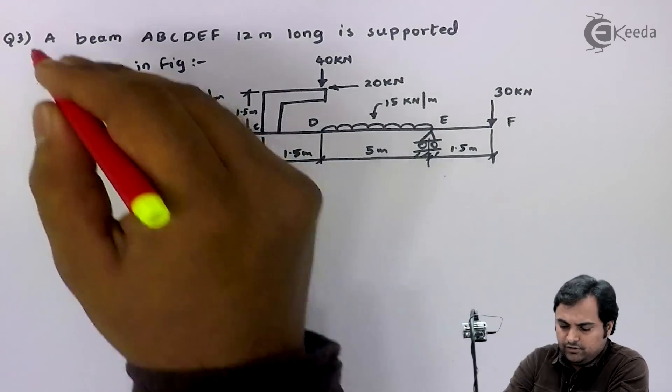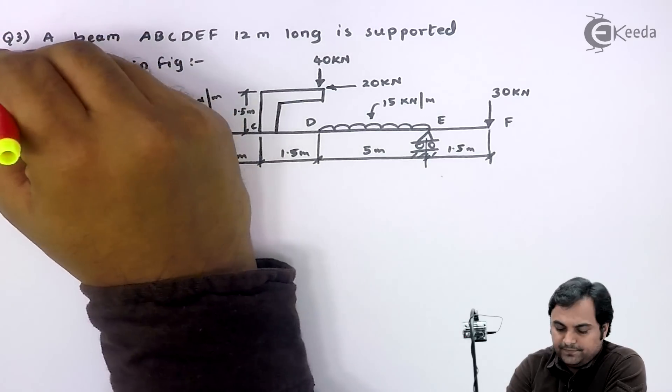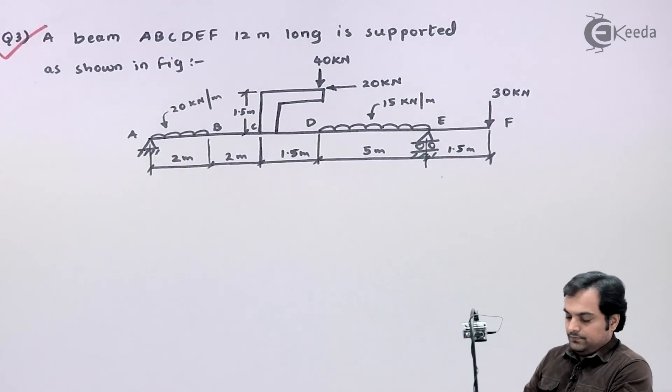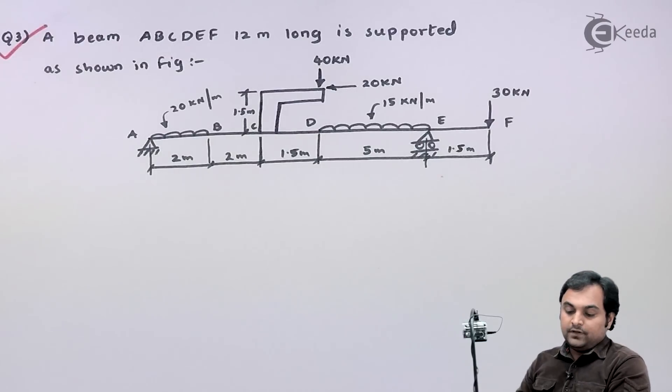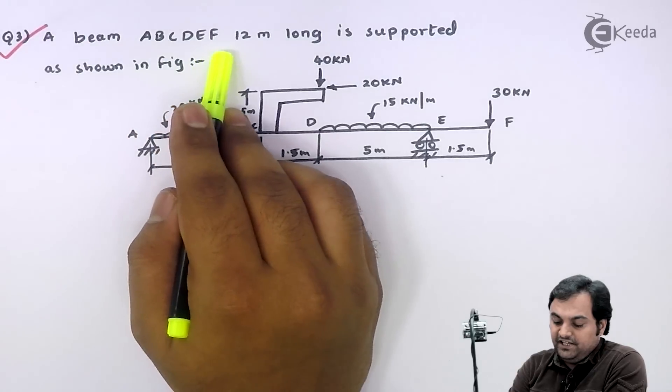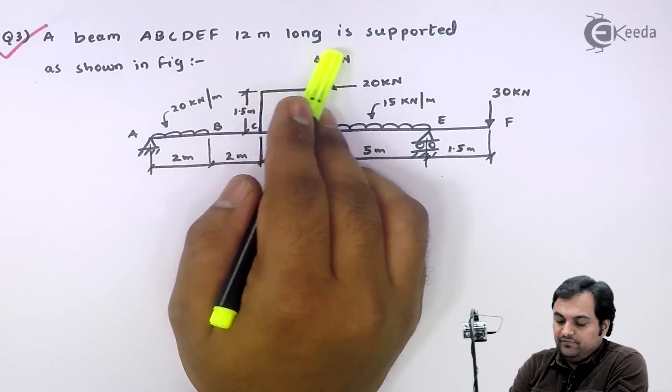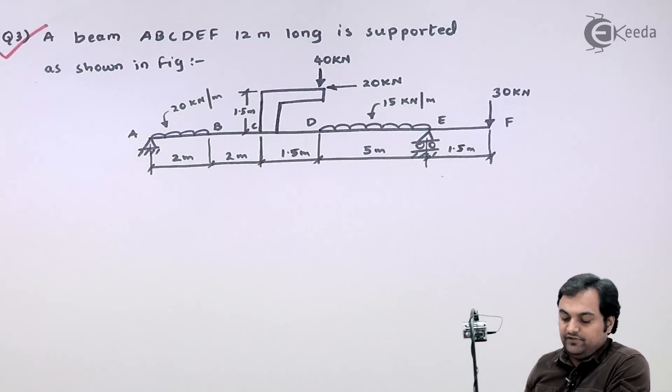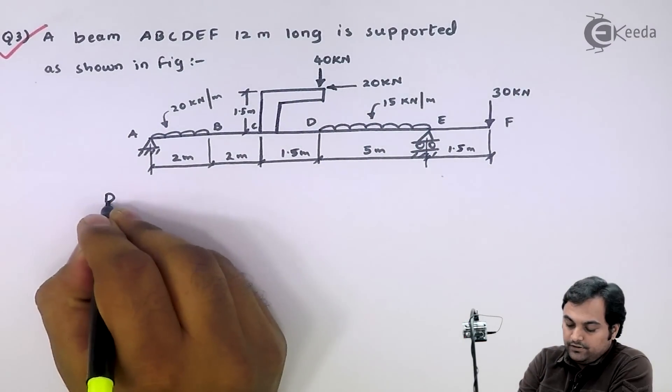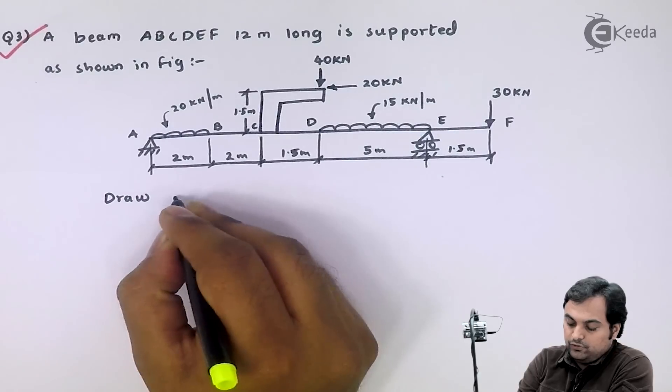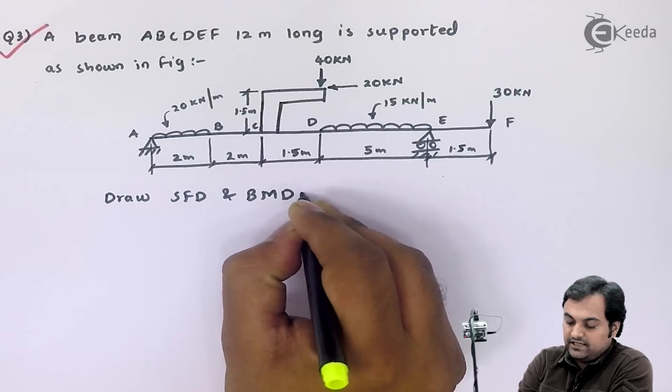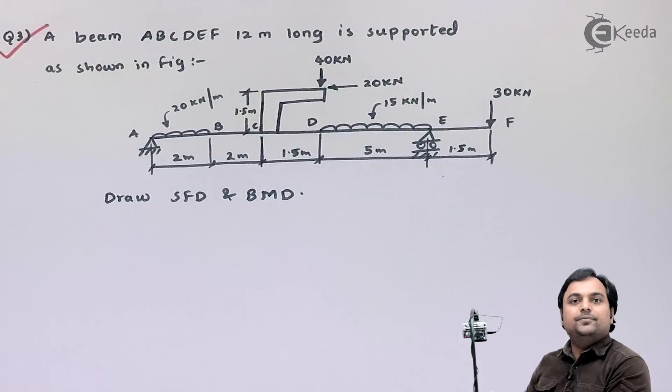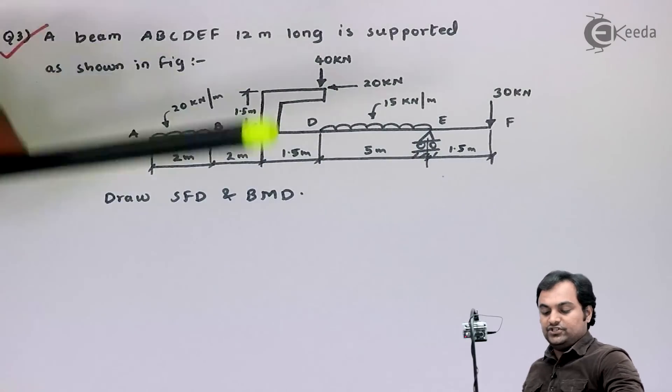Let us take the third question on shear force and bending moment. Here we have a question in which a beam ABCDEF, 12 meters long, is supported as shown in the figure. We have to draw SFD and BMD—shear force diagram and bending moment diagram—for this beam.